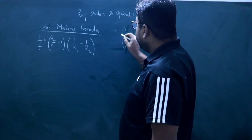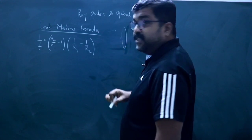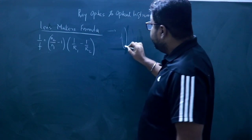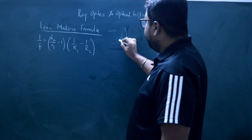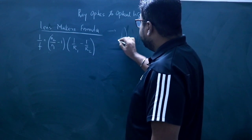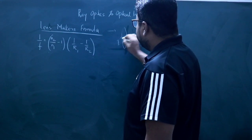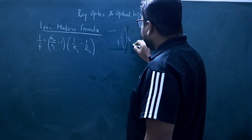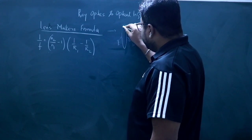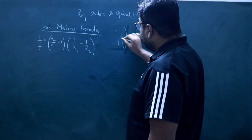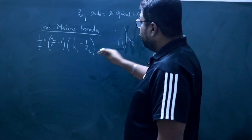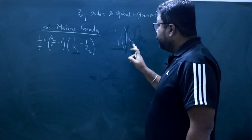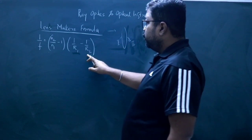This is the direction of the incident ray. This is the first refracting surface and this is the second refracting surface. The radius of this first surface is R1 and the radius of the second surface is R2.